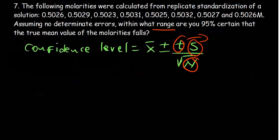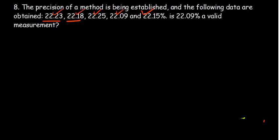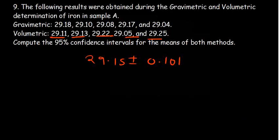Question seven is based on the confidence level which requires us to use what we call the t-test table. Question eight looks at the precision of the method, looking at identifying an outlier value that may not be valid by using what we call the q-test table.